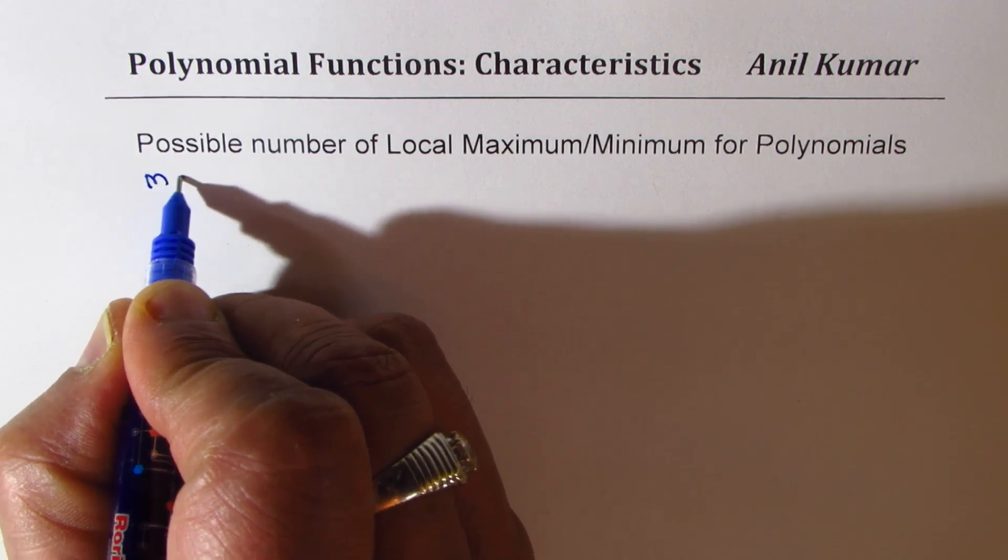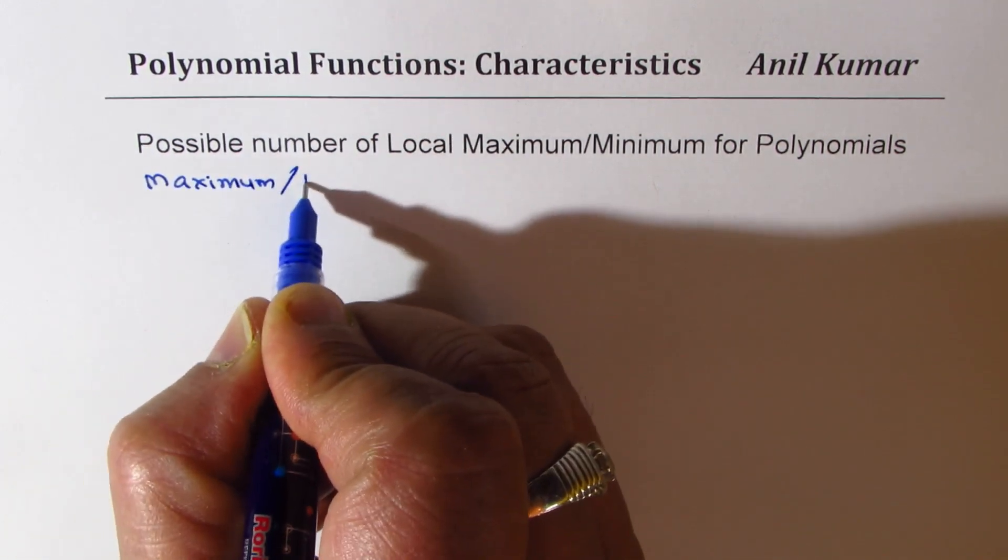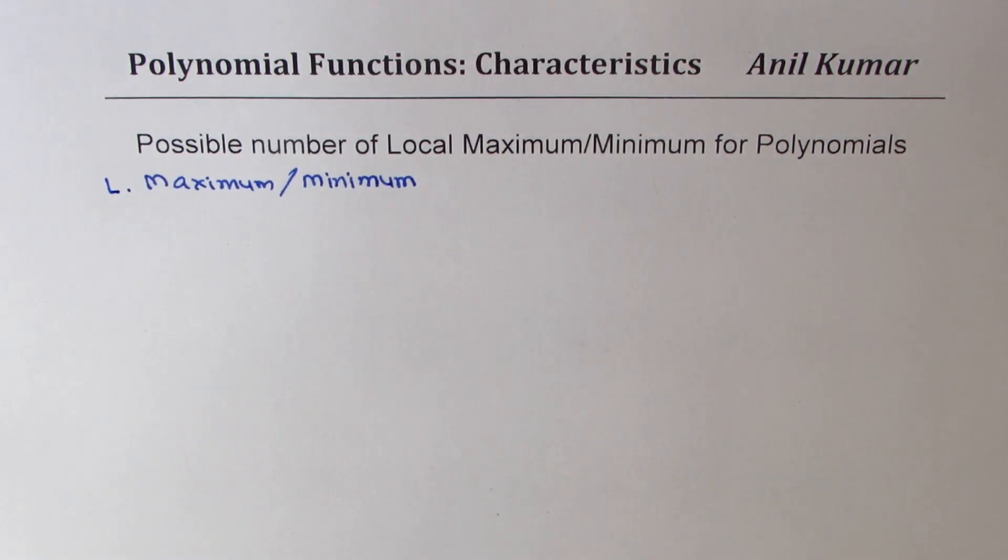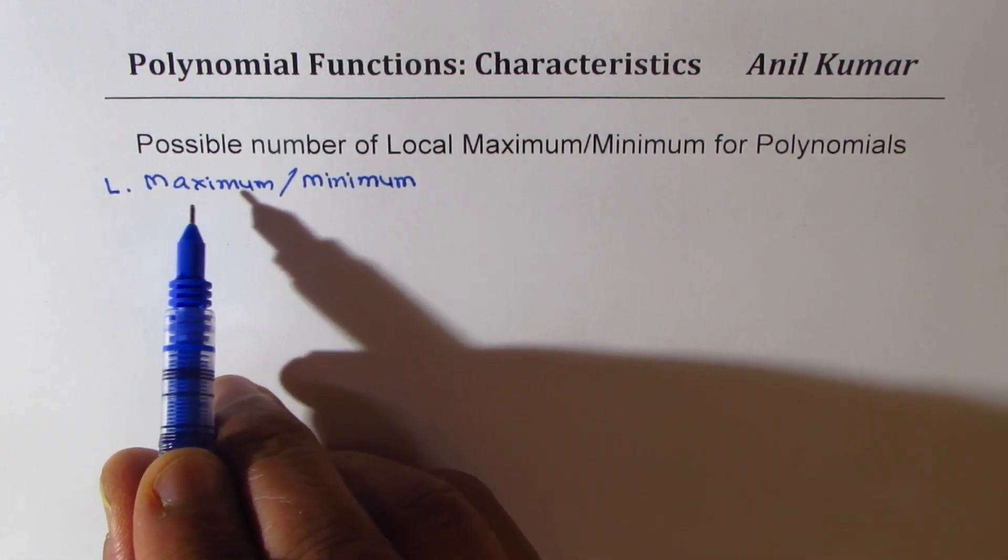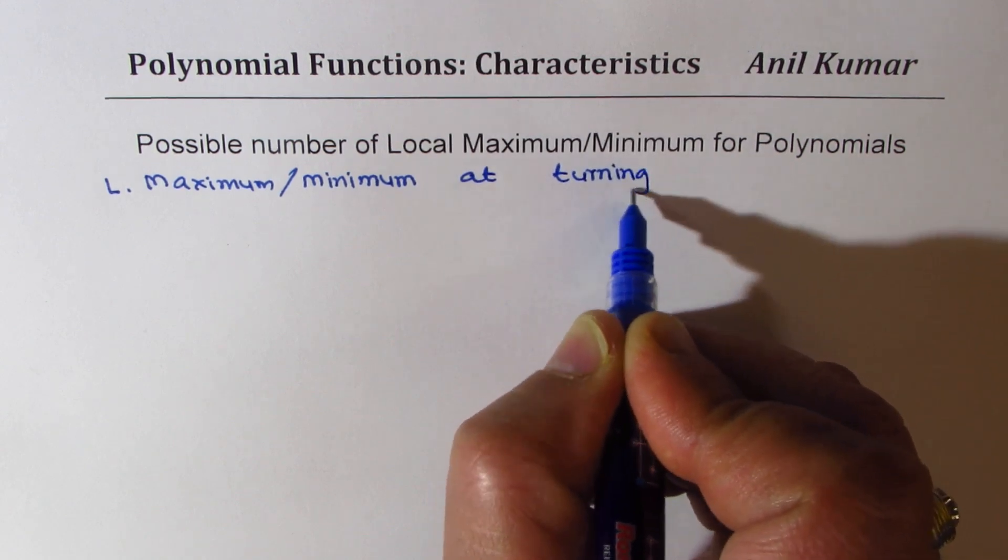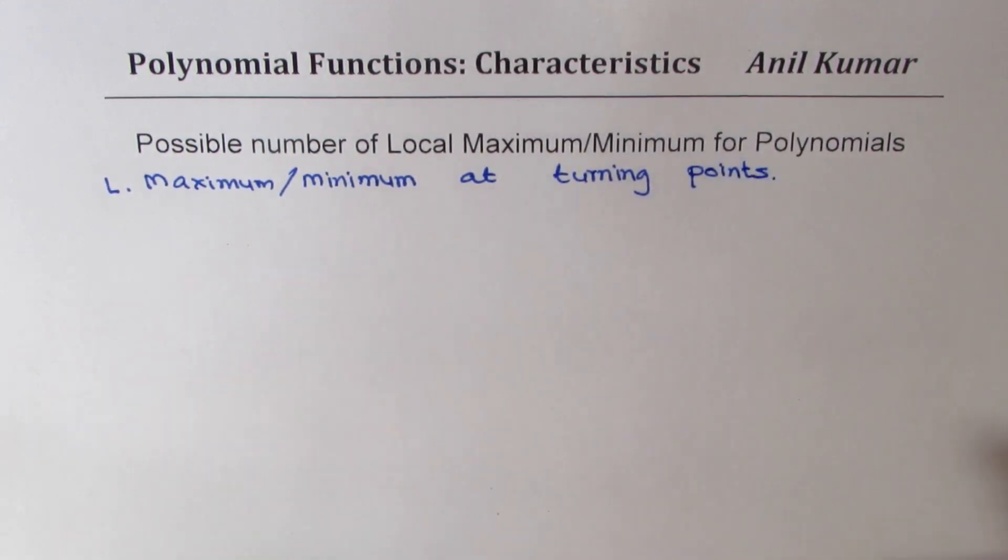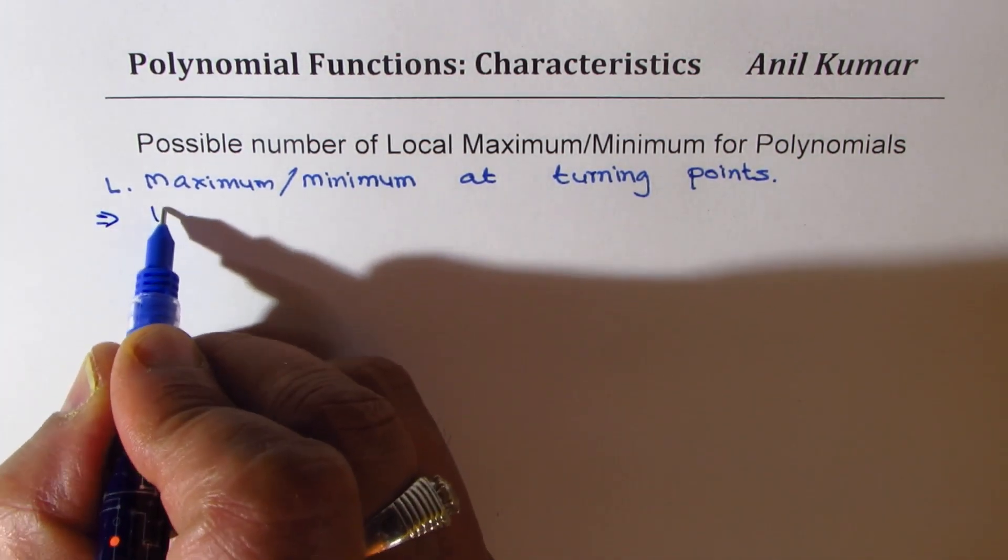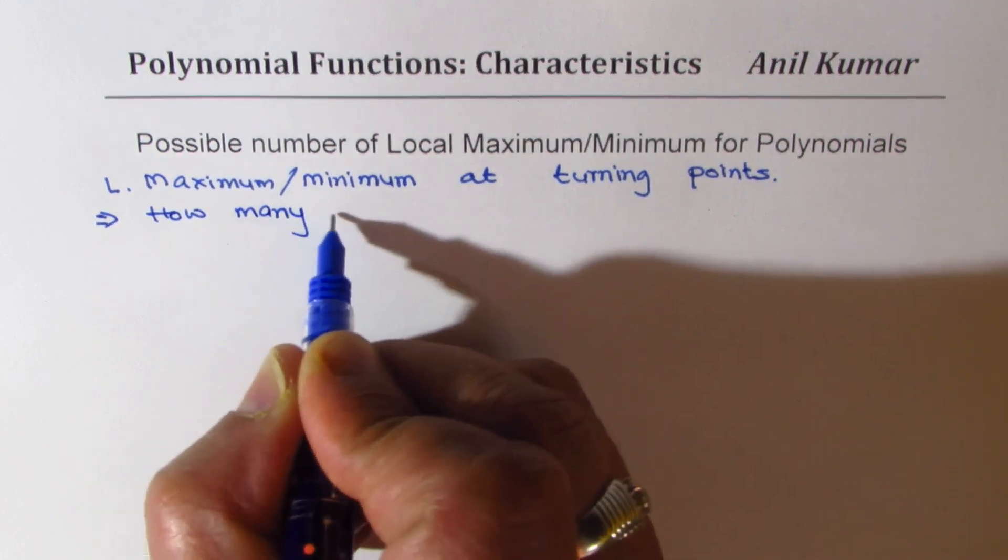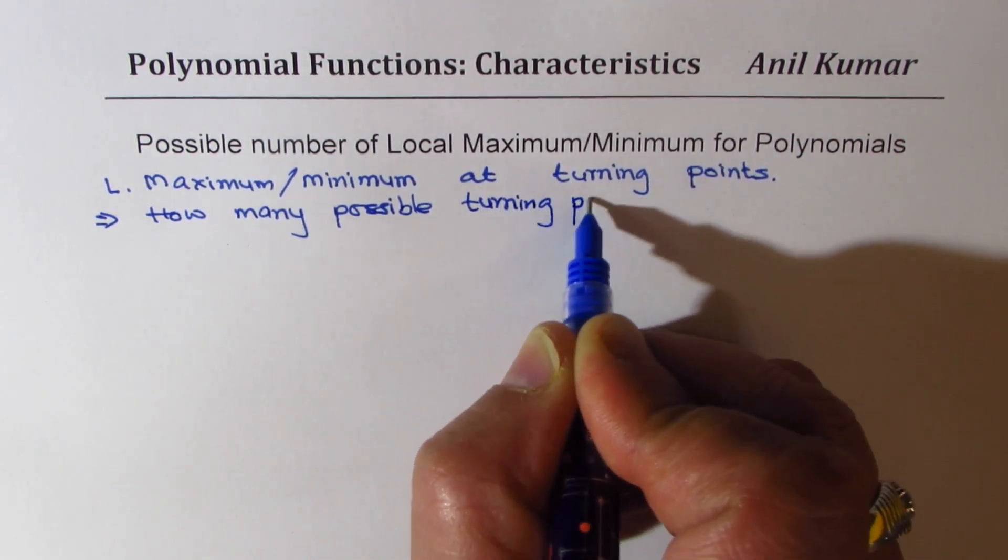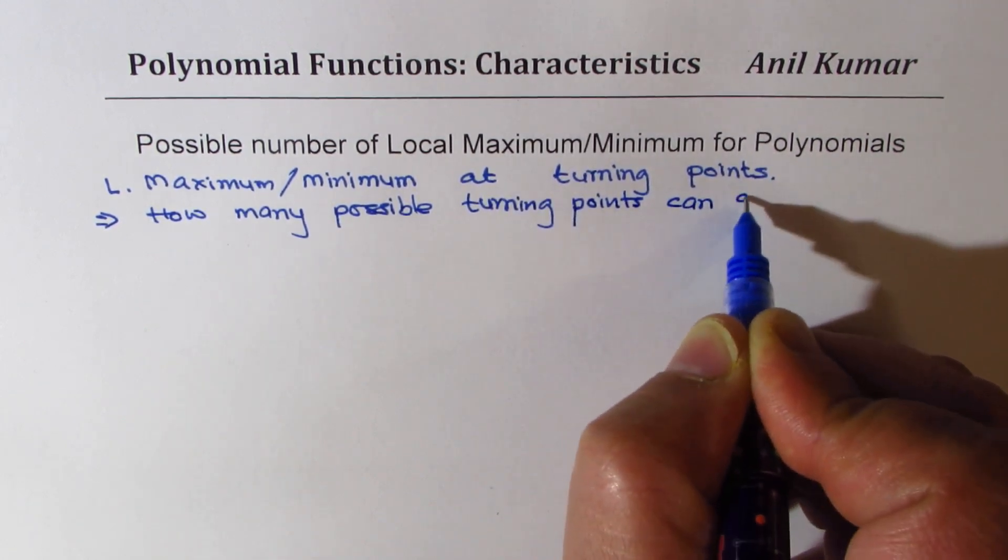So you need to figure out maximum or minimum points. Let's call it local. Since all the polynomials extend from infinity to other infinity, whatever we have, we have local maximum and minimum. Now these are at turning points. So basically we have to find how many turning points can a polynomial have. So basically the question is, how many possible turning points can a polynomial have.